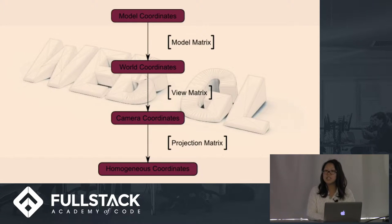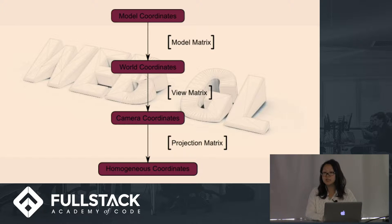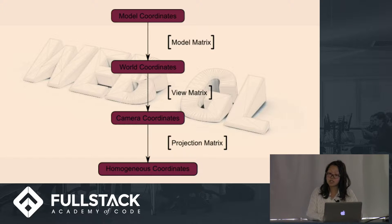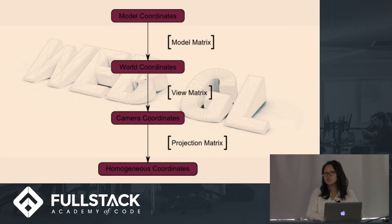Let's break this combination down. The model matrix maps from a model's local coordinate space into world space. The view matrix maps from the world space to camera space. And the projection matrix maps from the camera space to screen space.